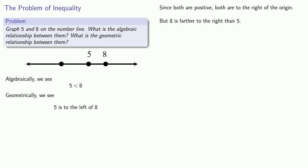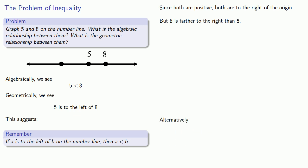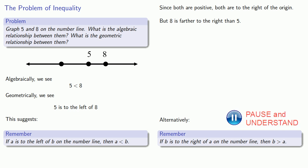This suggests the following idea. If a is to the left of b on the number line, that's a geometric idea, then a is less than b, which is our algebraic equivalent. Alternatively, we can look at it from the other direction. If b is to the right of a on the number line, then b is greater than a. This reduces the problem of the algebraic inequality to the geometric position on the right or left.